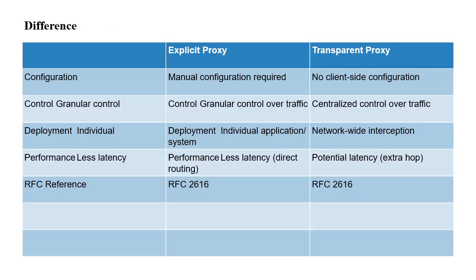In this section, the major differences between explicit proxy and transparent proxy are summarized. From a configuration perspective, explicit proxy requires configuration while transparent proxy requires none. Granular control — explicit proxy gives more granular control based on application or browser, whereas transparent proxy provides centralized control at the network level. Deployment — individual application or system configuration is possible in explicit proxy, while transparent proxy performs network-wide interception. Performance-wise, explicit proxy has less latency due to direct routing, while transparent proxy may add one additional hop, introducing some latency. These proxy types are tracked in RFC 2616.